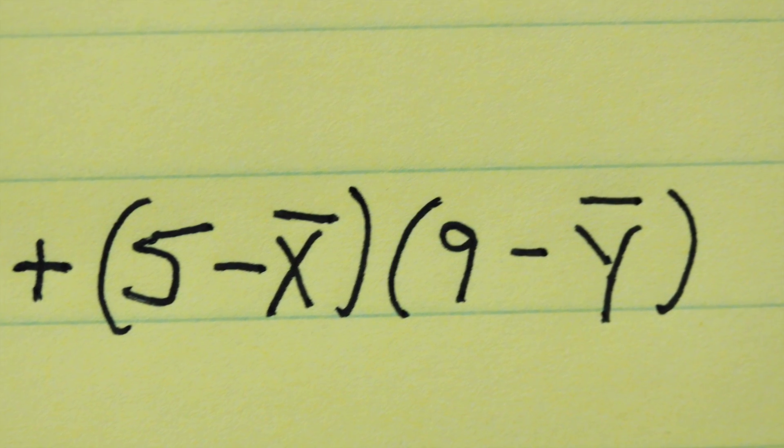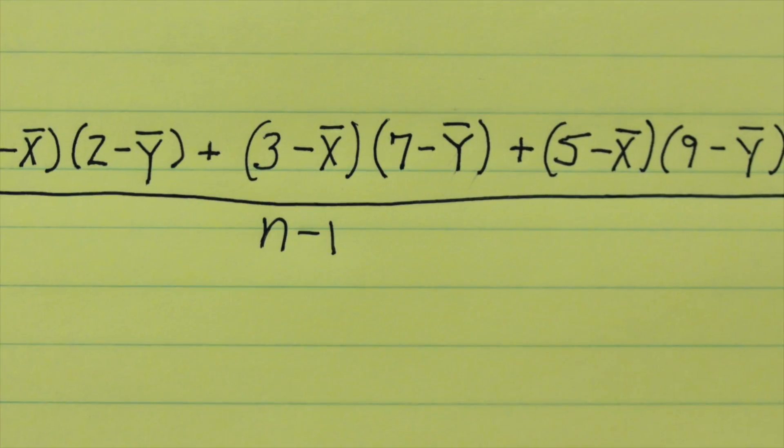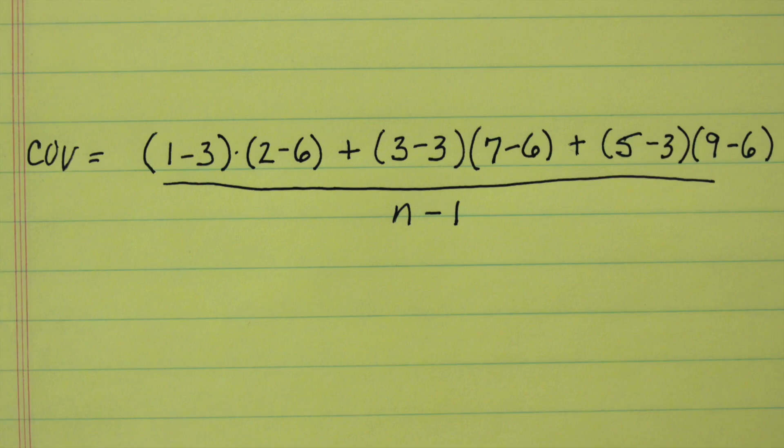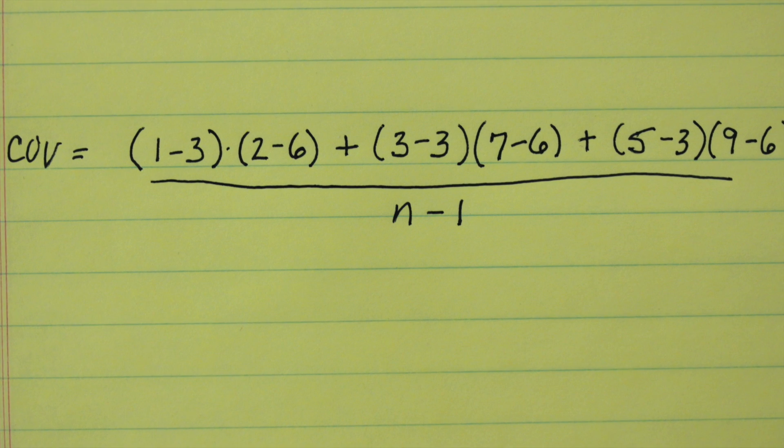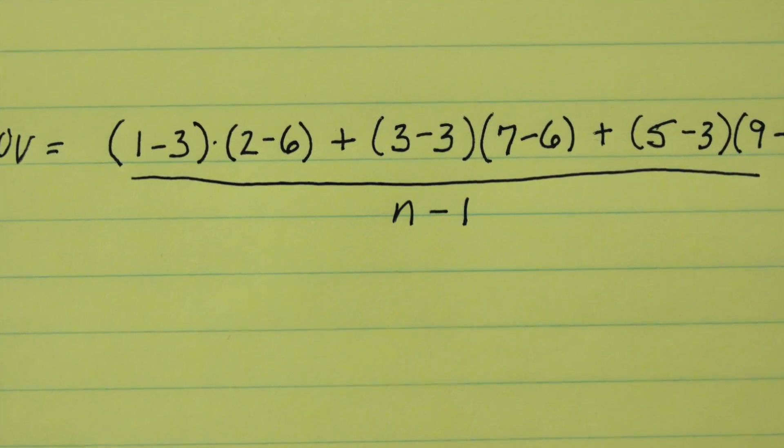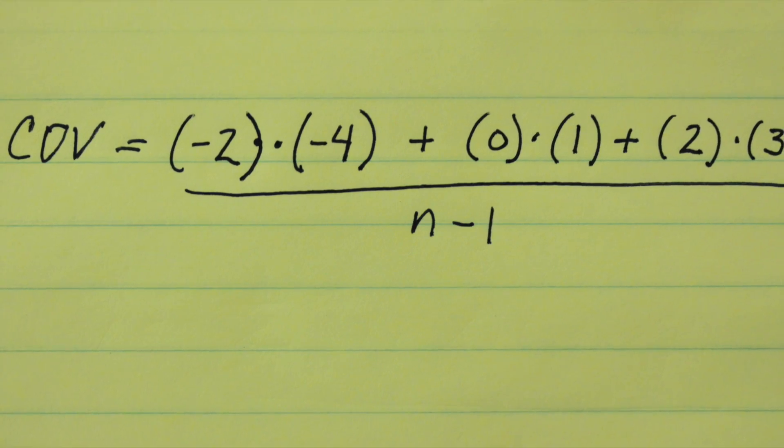So that gives us our overall equation where we're looking at each of these points. Now we can then plug in the averages and we get 1 minus 3 times 2 minus 6 plus 3 minus 3 times 7 minus 6 plus 5 minus 3 times 9 minus 6 all divided by n minus 1. We can then do the math.